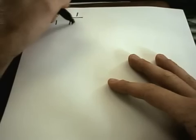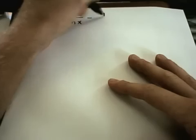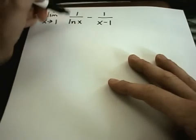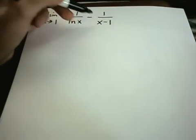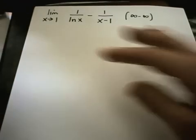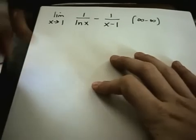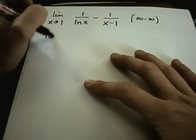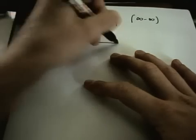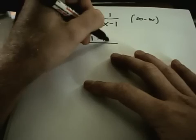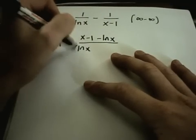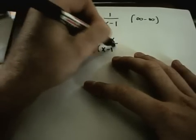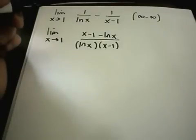Let's do one more. We have the limit as x approaches 1 of 1 over ln of x minus 1 over x minus 1. Since ln of 1 is 0, you're getting 1 over 0 minus 1 over 0, which you can think of as infinity minus infinity. When you have fractions floating around, a good idea is to get common denominators. So I'll have x minus 1 minus ln of x in the numerator, and ln of x times x minus 1 in the denominator.